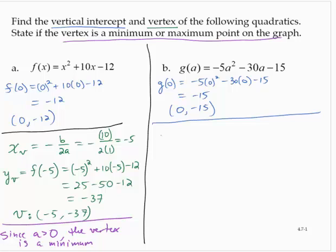The vertex. Well, the a-coordinate of the vertex would be given by negative b over 2a. Now be careful here. Don't mix up your a's. We would have negative, negative 30 over 2 times negative 5. So here we have a bunch of negatives. We have three negatives, so I know that's a negative. Negative 2 times 5 is 10, 30 over 10 is 3.